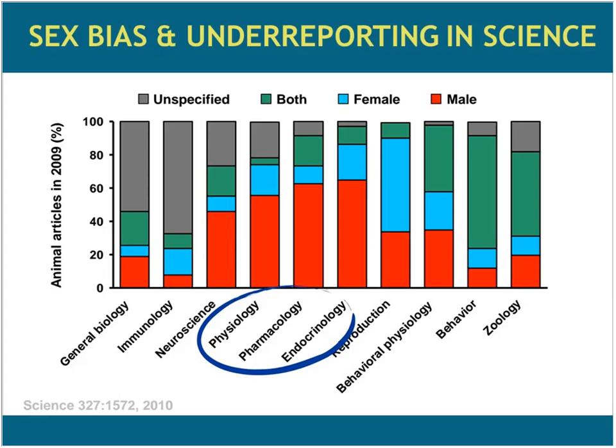You can see this in different areas of science — these are animal studies. The gray bars are where they haven't specified if animals were male or female, and the red bars are where studies were male only. Areas like physiology, pharmacology, and endocrinology are highlighted. Neuroscience is also one of the problematic areas. We know there are huge sex differences in pharmacology in particular that are very well documented and have been in the news quite a bit.